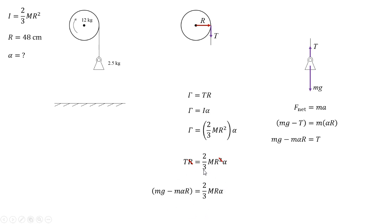Look at this. We can solve this equation. The only unknown is alpha, the angular acceleration. We know little m is 2.5. We know g is 9.81. R we have, that's 0.48 meters. And big M we also know, 12 kilograms.